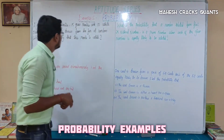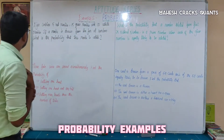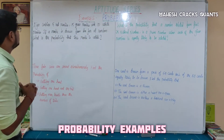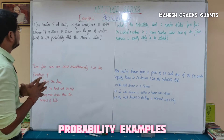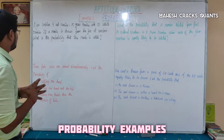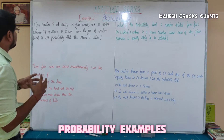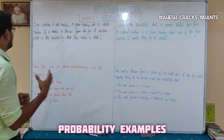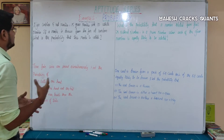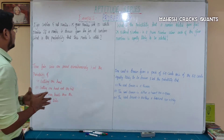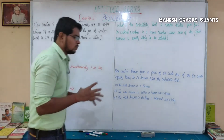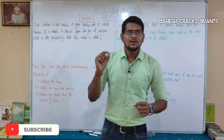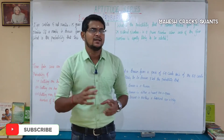First sample. The jar contains 5 red marbles, 15 green marbles and 10 white marbles. If a marble is drawn from the jar at random, what is the probability that this marble is white? There are marbles in a jar — this is the total number of marbles in the jar.